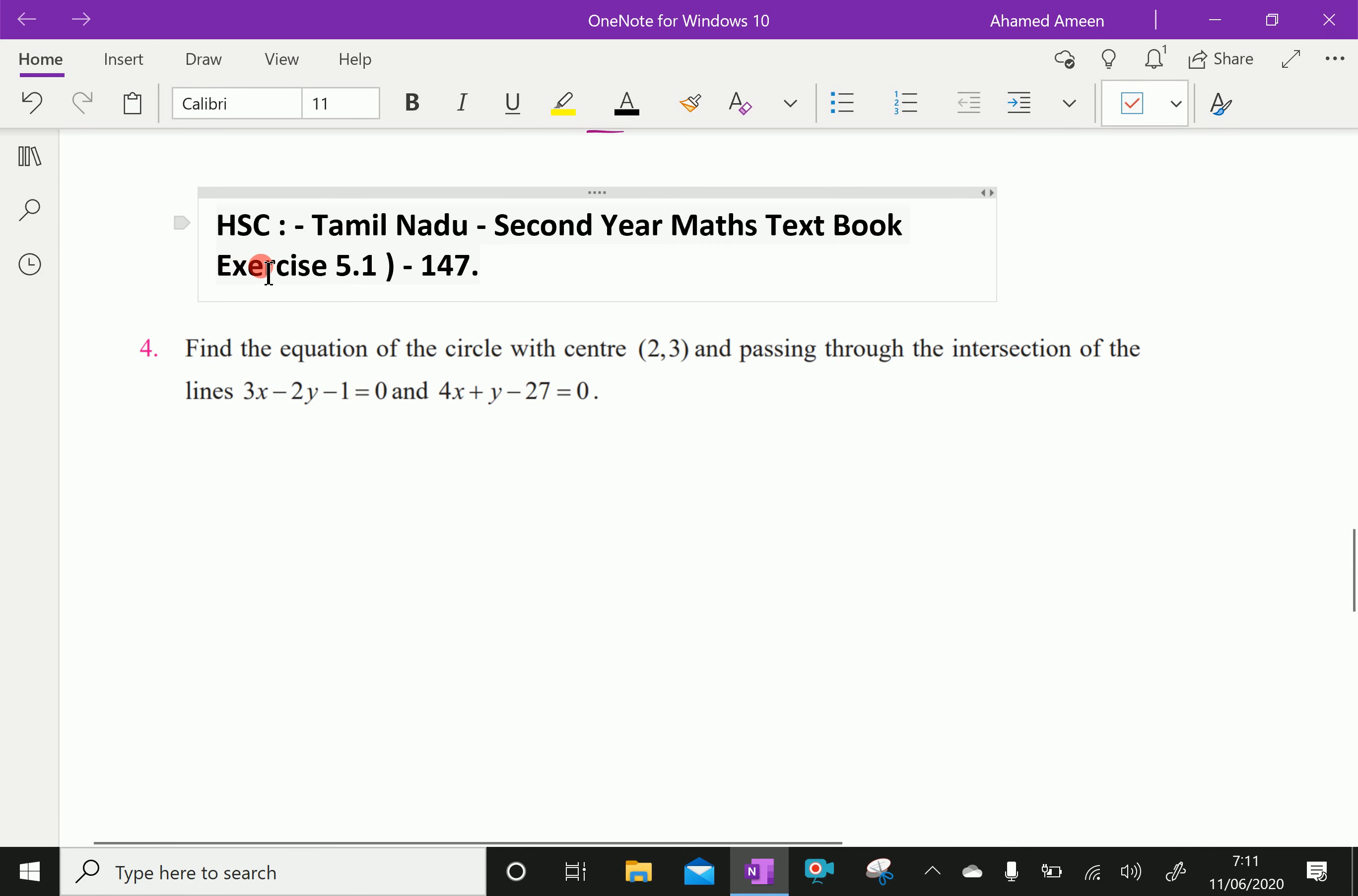Welcome to Aminacademy.com. Let us do Tamil Nadu Higher Secondary Second Year Maths Textbook Exercise 5.1, Question No. 4. Find the equation of the circle with center (2,3) and passing through the intersection of the lines 3x minus 2y minus 1 equals 0 and 4x plus y minus 27 equal to 0.